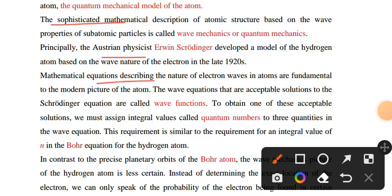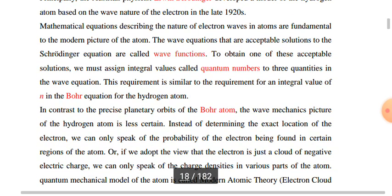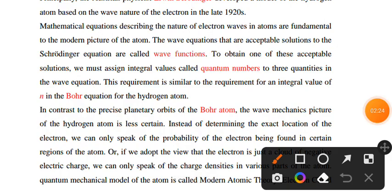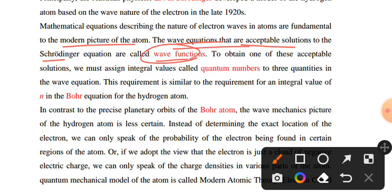Mathematical equations describing the nature of electron waves in atoms are fundamental to the modern picture of the atom. The wave equations that are acceptable solutions to the Schrödinger equation are called wave functions. To obtain one of these acceptable solutions, we must assign integral values called quantum numbers to the wave equation.